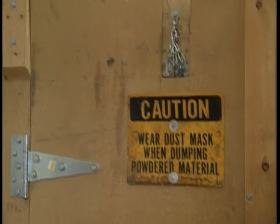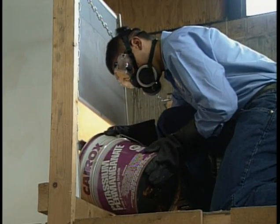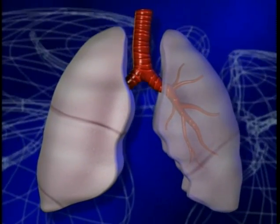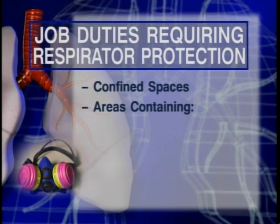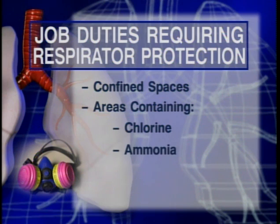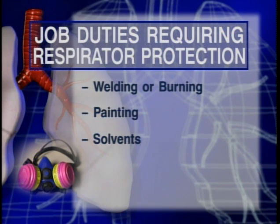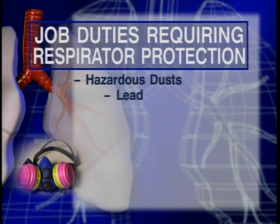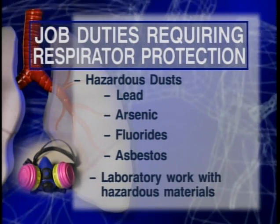There are several different types of respirators used by utility workers, each one designed for a specific purpose. Here are some of the job duties at Water Utilities that require respirator protection: working in confined spaces, working in or responding to leaks in areas containing chlorine, ammonia, ozone, and carbon monoxide, welding or burning, painting, using solvents, thinners, or degreasers, any work that generates harmful quantities of dust including dust from lead, arsenic, fluorides, and asbestos, and laboratory work with hazardous materials.